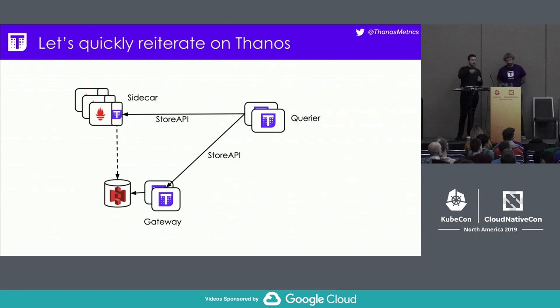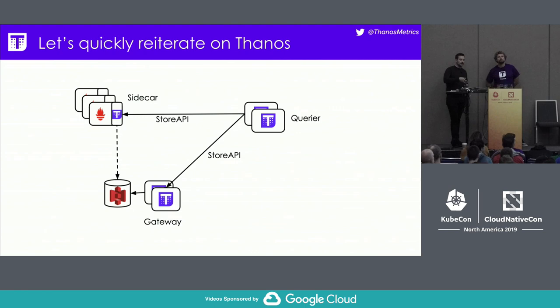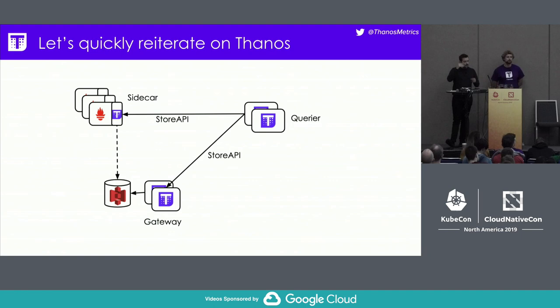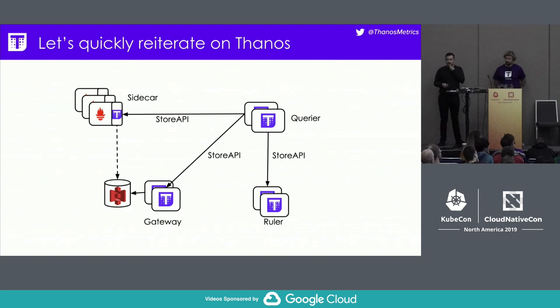The very next thing people do is configure the sidecar to upload data that Prometheus periodically flushes to disk, to object storage. And then you put the Thanos store gateway in front and can query all of this long-term data. When you now insert a query into the querier, it won't only fan out to the sidecars for live data — you also get the historic data loaded from object storage.